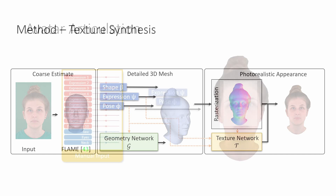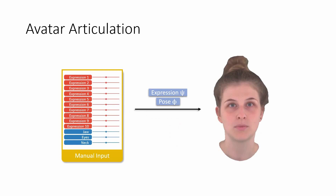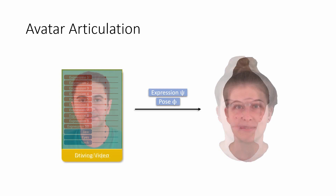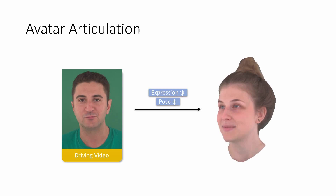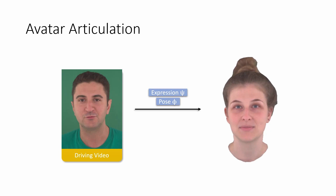The resulting avatar is controlled via pose and expression parameters psi and phi of the morphable head mesh. These can be tuned manually for expressions and jaw movements, eye poses, and neck rotations. A driving sequence may also be used to extract the controlling parameters. The animation is consistent even from novel viewing directions, from the side or other camera trajectories around the head.